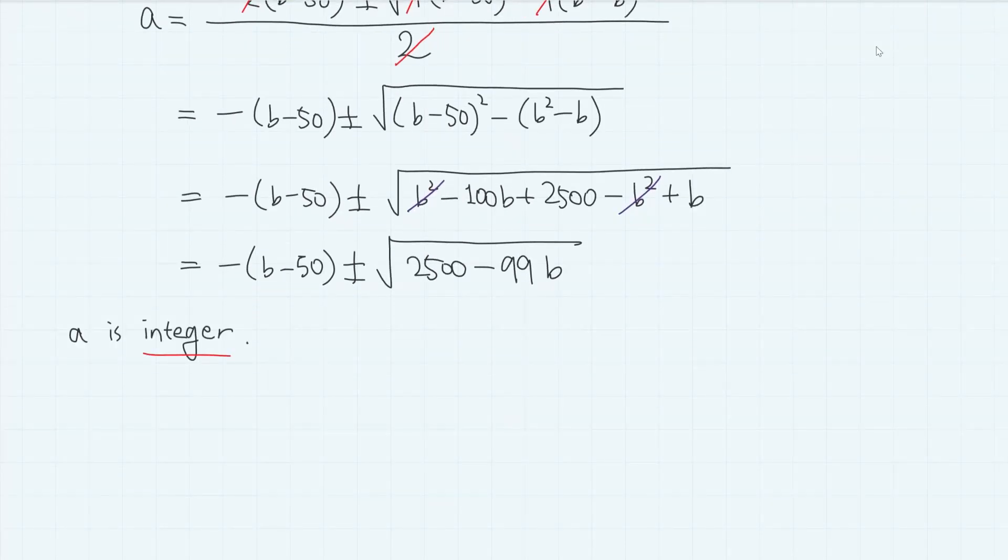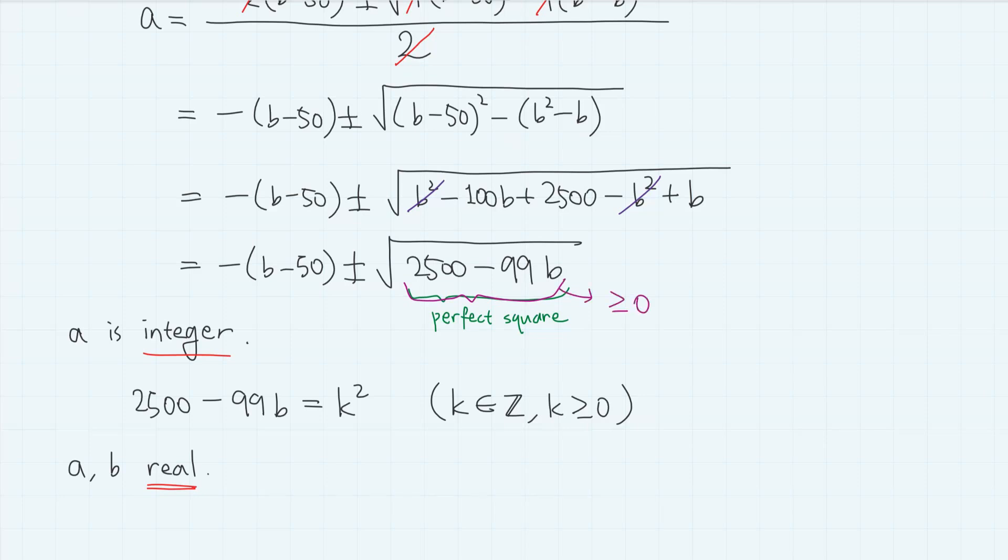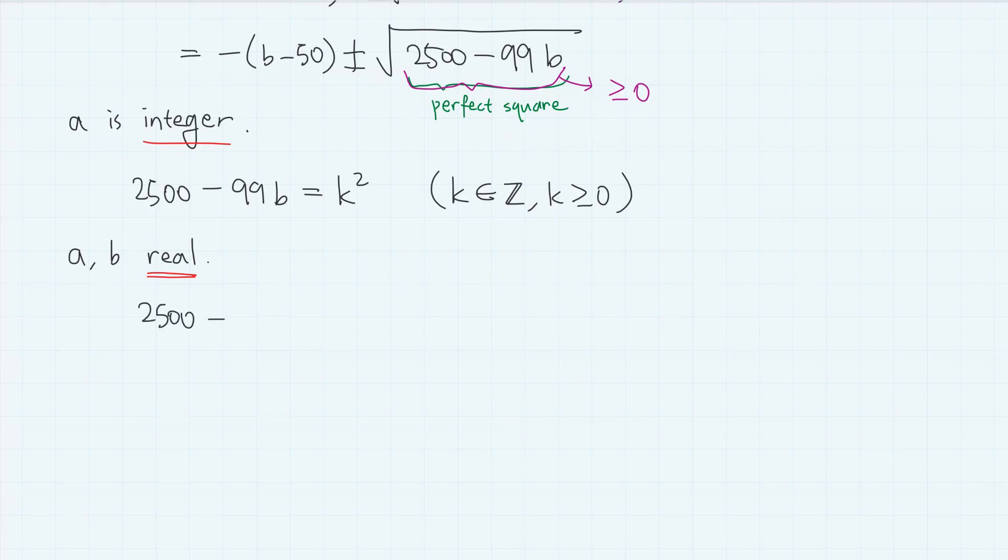Since a is integer, the inside of the square root part must be a perfect square. That is, 2500 minus 99b equals k squared for some non-negative integer k. Also, since a and b are real numbers, the inside of the square root must be non-negative. So we have 2500 minus 99b is non-negative, which gives b is less than 2500 divided by 99, which is 25 point something. So b is a non-negative integer satisfying this inequality, but this still leaves too many possible candidates for b. So let's use something else.